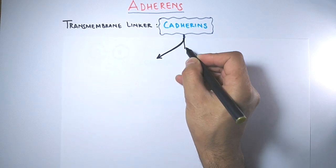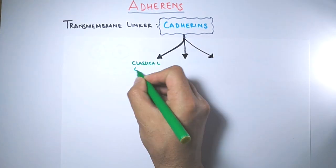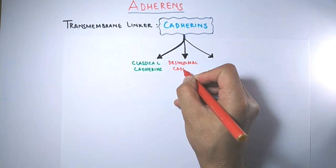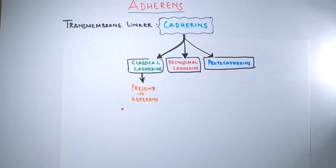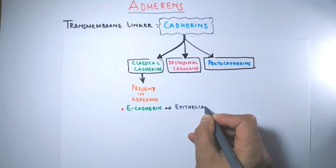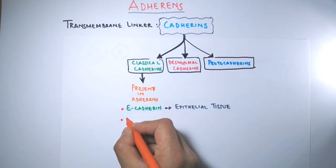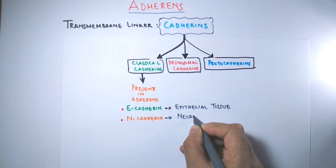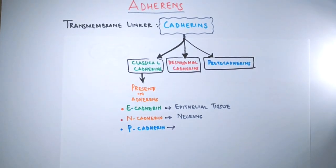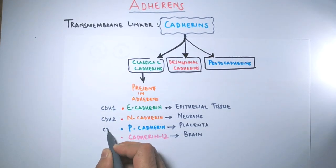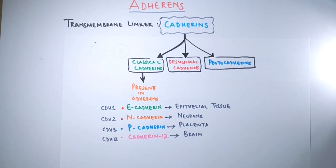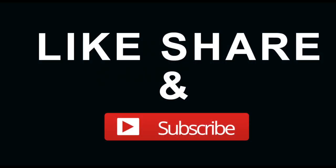The transmembrane linker in adherens junctions is cadherin, which is classified into three classes: classical cadherins, desmosomal cadherins, and protocadherins. It is classical cadherin that is present in adherens junctions. Classical cadherins include E-cadherin (epithelial cadherin, also called CDH1), N-cadherin (present in neurons, also called CDH2), P-cadherin (placental cadherin, also called CDH3), and cadherin-12 found in the brain (CDH12).